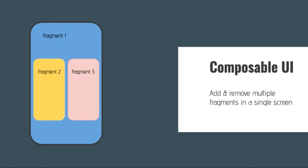In fact, that's why fragments were invented. On a tablet, you might want one fragment showing a list of emails and another fragment showing the currently selected email — this is called a master detail view. The main point is that fragments encapsulate individual pieces of UI and their controlling logic, and you can add and remove fragments based on current configurations and requirements.